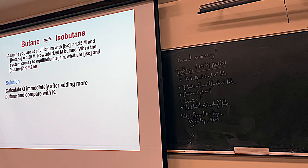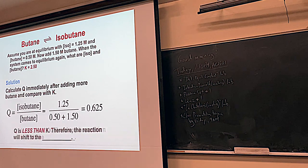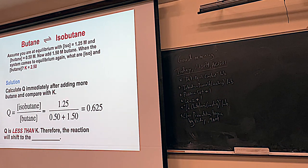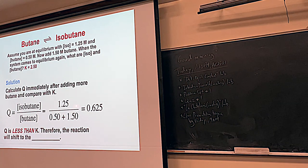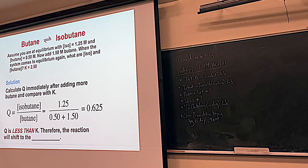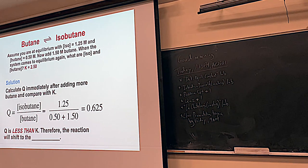Mathematically, you can calculate Q to see what's going to happen. Isobutane initially is 1.25; you had 0.5 butane but now we're adding extra, so Q equals 1.25 divided by 2.0, which is 0.625. Comparing to K = 2.5, Q is less than K. If Q is less than K, the reaction will shift to become more like K. To make this number bigger you increase the numerator or decrease the denominator — both mean making more products. A shift to the right means more products, fewer reactants.